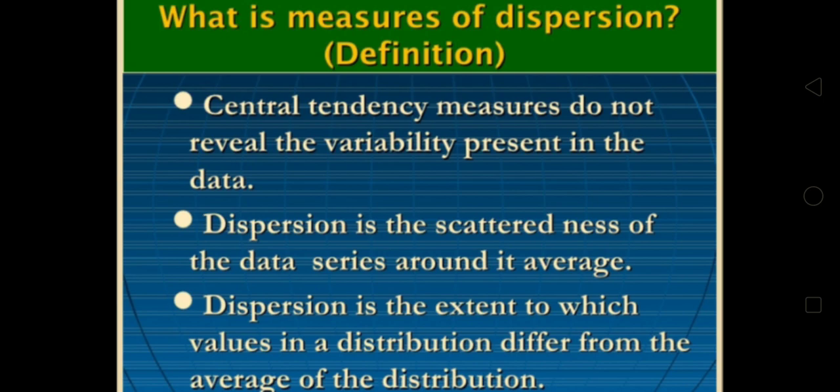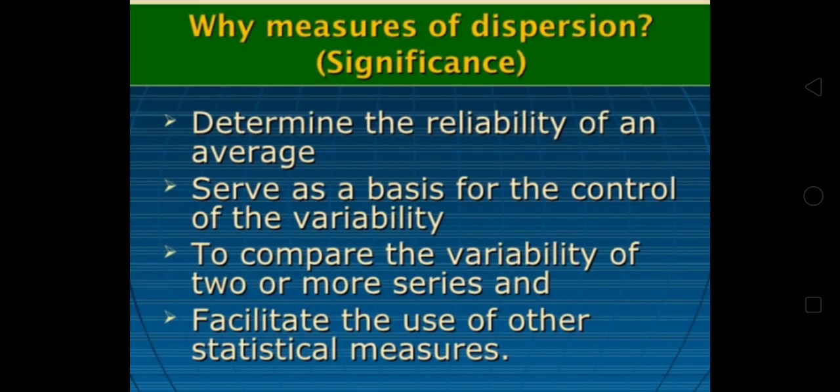Dispersion is the extent to which values in a distribution differ from the average of the distribution. Why measure of dispersion or significance: it determines the reliability of an average, it serves as a base for the control of variability.